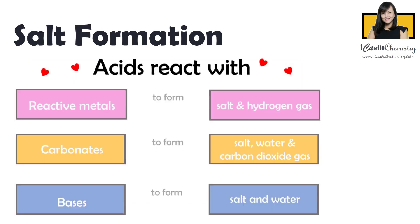We can make salt by reacting acids with three things: metals, carbonates, or bases. Acids provide the negative ion, while metals, carbonates, and bases provide the positive ion.